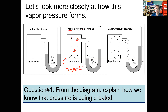We know the pressure is building because the mercury tube is changing its height — from the original height where both sides of the mercury tube are at the same height, to the second frame where the column of mercury on the right-hand side is higher than the column of mercury on the left-hand side. There's a difference in height which can only be accounted for by the gas pressure — the vapors formed from the evaporation of the liquid pushing down on this column of mercury. That's the evidence we can use to show that there is a vapor building over here.